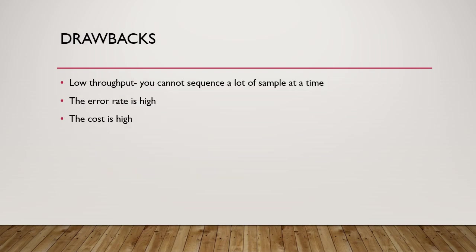SMRT sequencing has some drawbacks as well, like low throughput — one cannot sequence a large number of samples at a time. The error rate is high, about 11 to 15 percent as described earlier. Finally, it is more expensive than other technologies. Next, I invite Lieutenant Ligase.